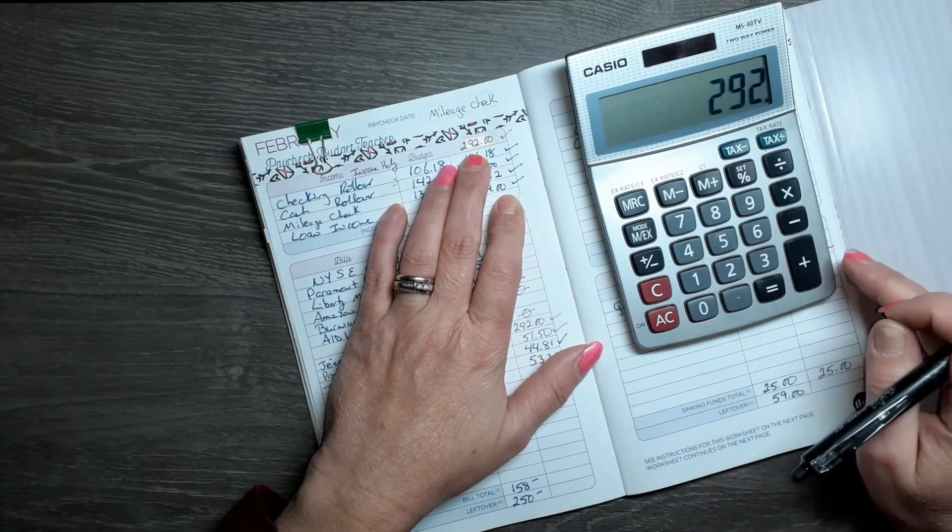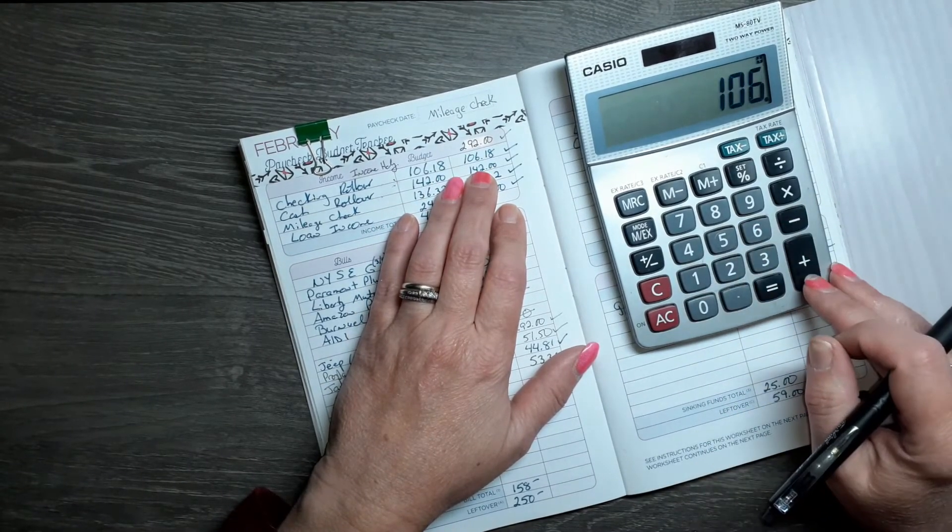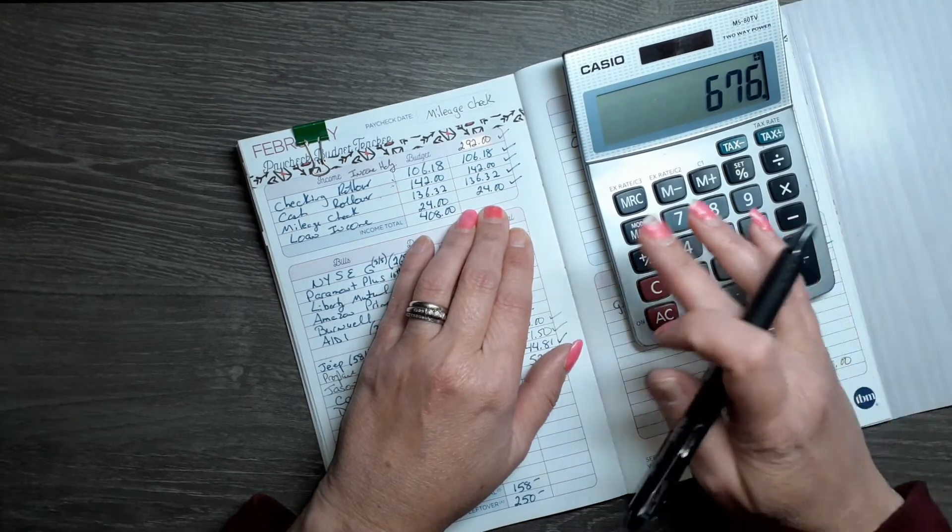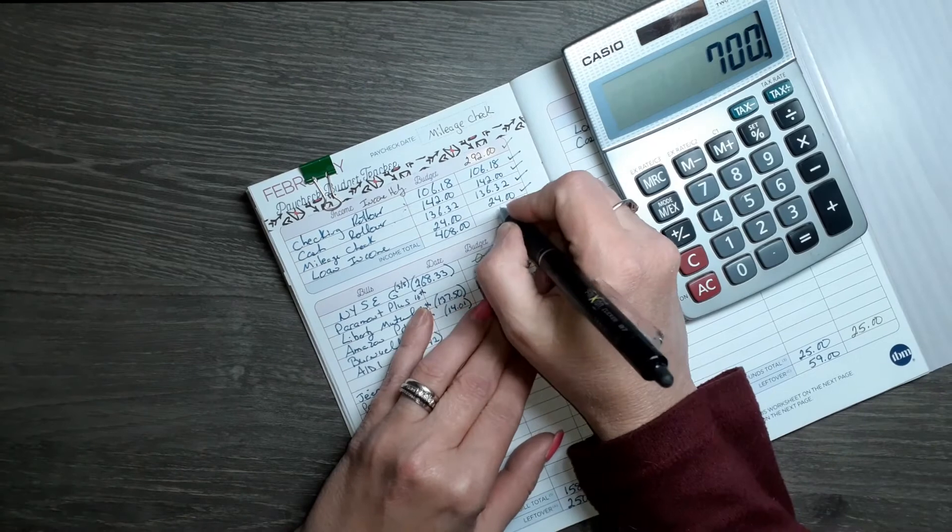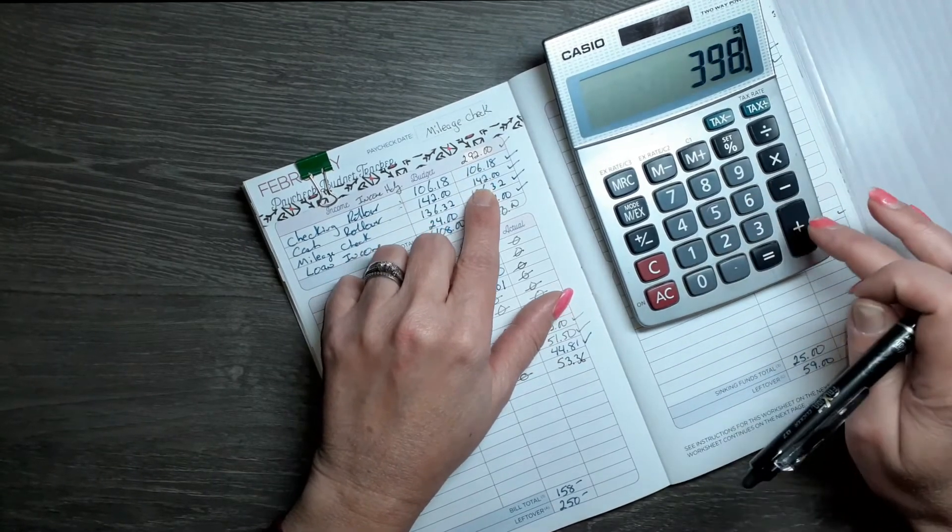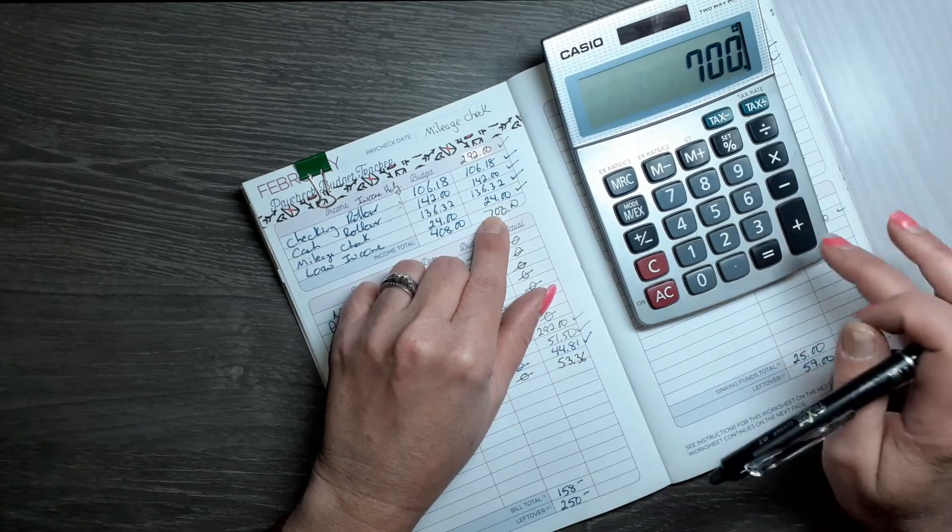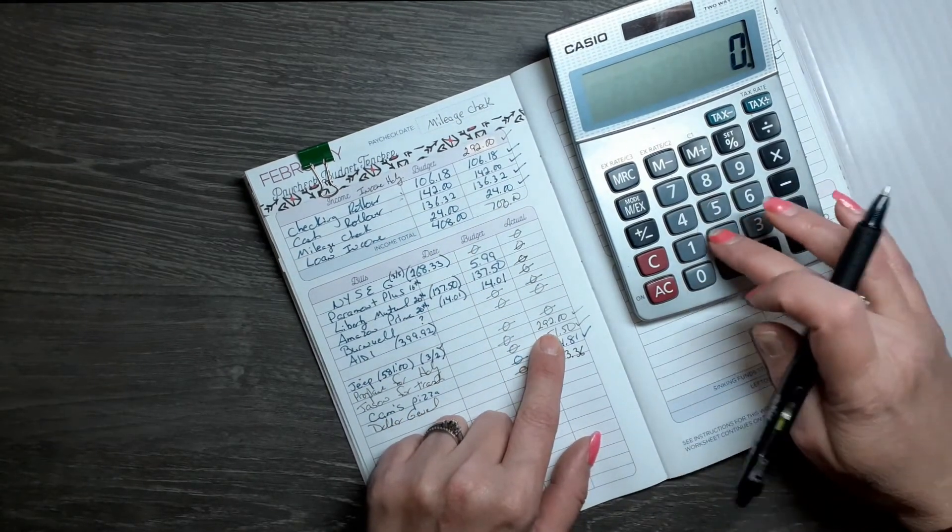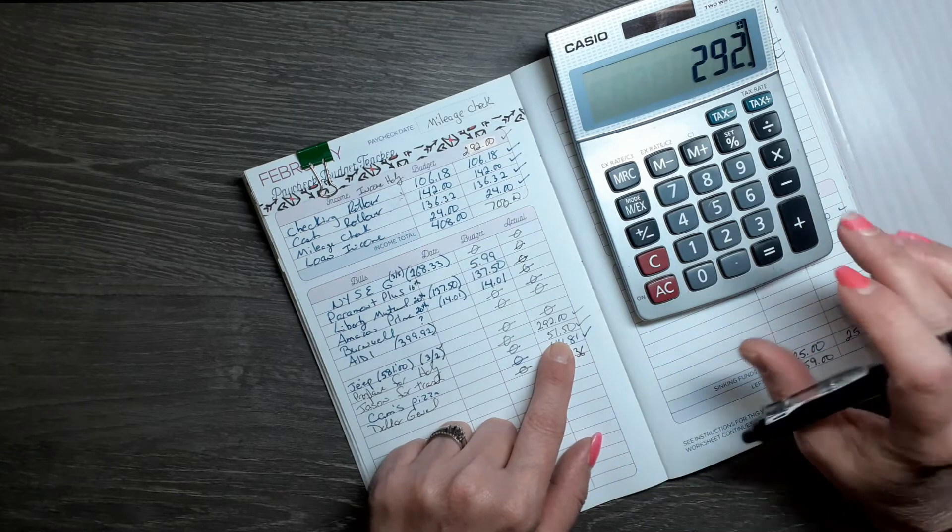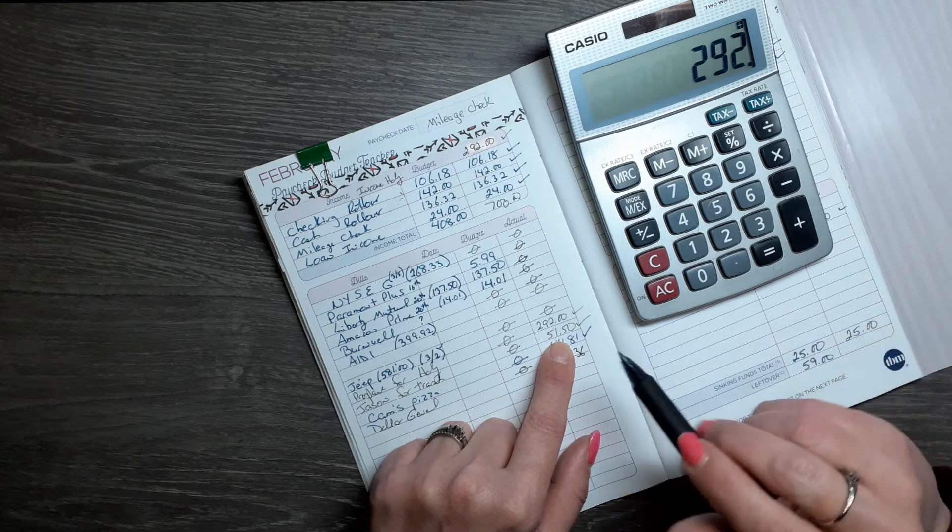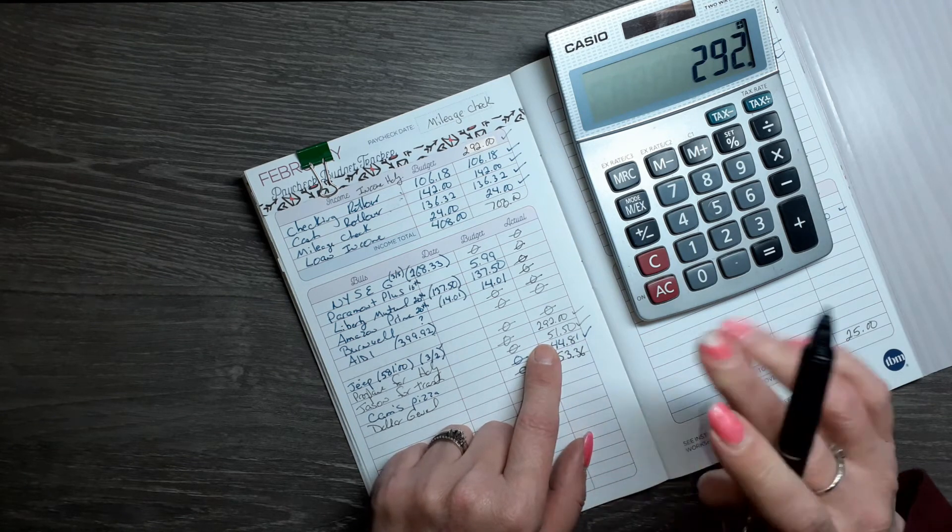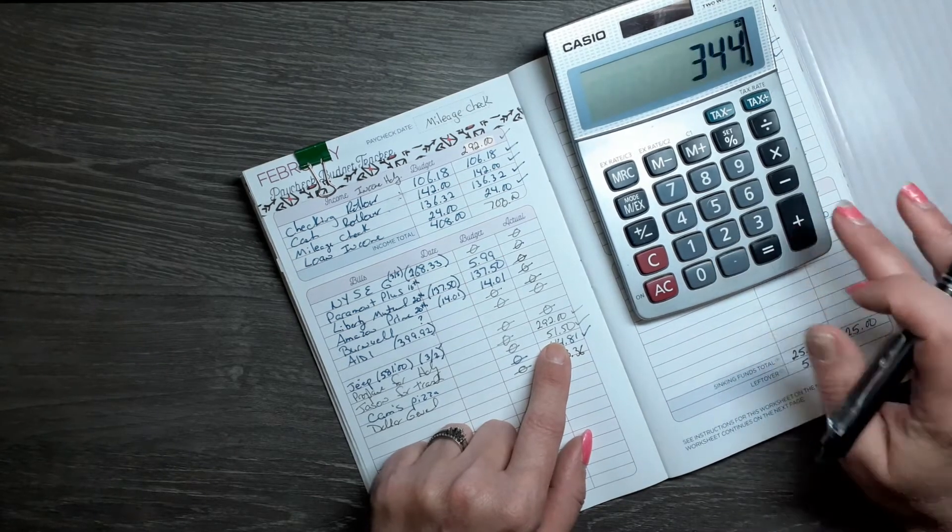Haley paid me back $292 plus $106 checking rollover, $142 cash rollover, my mileage check was $136, and Haley also paid me $24. So the income was $700. Propane for Haley takes care of that. The stuff pulled out of the addition was thrown into a pile and Jason does odd jobs - I paid him $52 on Venmo for that. He came and got the trash.